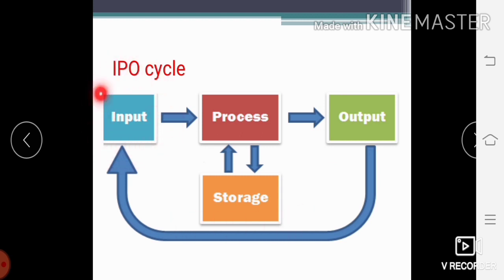Data enters into the computer, CPU processes that data, then gives the data into the storage devices. Data from the storage devices—CPU gets the data from the storage devices, then it will give the output to the output devices.